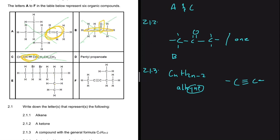Compounds A, B, and C cannot be part of the solution. Compound D has no triple bond and no 'yne' in its name. Compound E also has no triple bond. Compound F is where we have the triple bond — you can see it there. So the answer for 2.1.3 is F. If you know exactly what you're looking for, this becomes extremely easy.